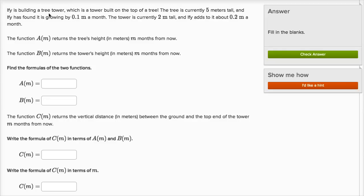Ify is building a tree tower, which is a tower built on top of a tree. The tree is currently five meters tall, and Ify has found it is growing by 0.1 meters a month, or a tenth of a meter a month.